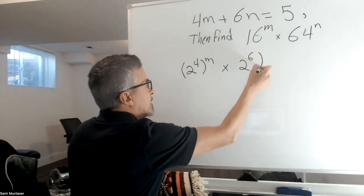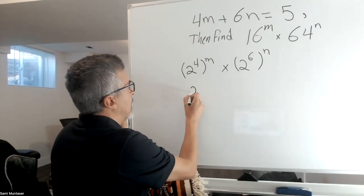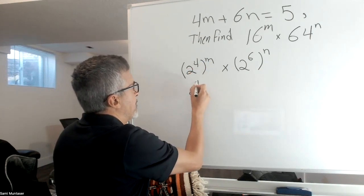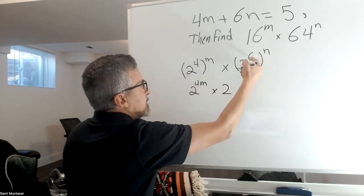That's what 64 is, and then we have n. Now I'm just going to multiply the exponent inside, so 2 to the 4m times 2 to the 6 times n.